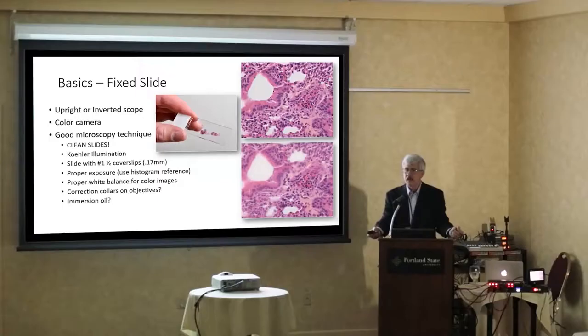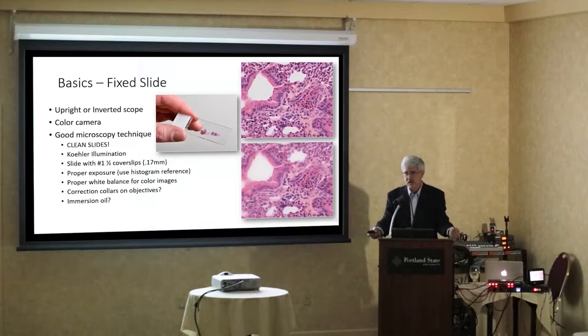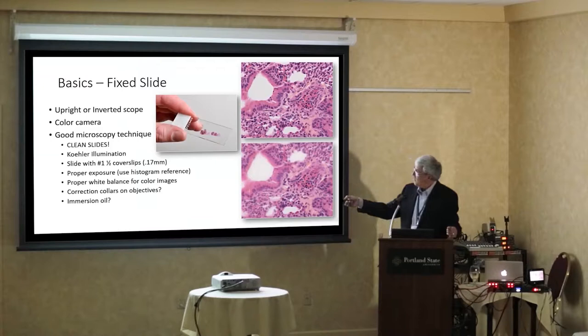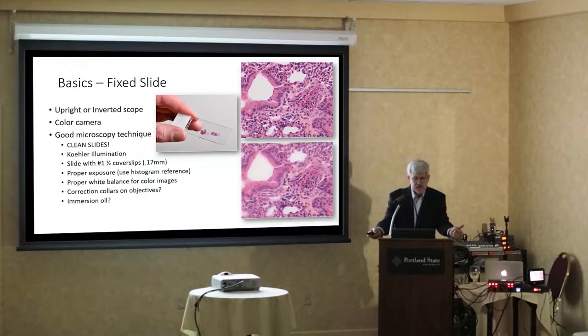Coverslips — even if you don't coverslip your own slides, coverslips come in a variety of flavors: number ones, one-and-a-halves, and twos. Number one-and-a-halves are 0.17 mm thick; number twos are 0.22 mm. If you're doing high magnification without a correction collar, you'll get fuzzy blurry pictures because the lenses are corrected for 0.17, not 0.22. The correction collar can correct for that. Are you using oil? Are you doing your white balance properly? Proper exposure? These are just the beginning of the multidimensional process.